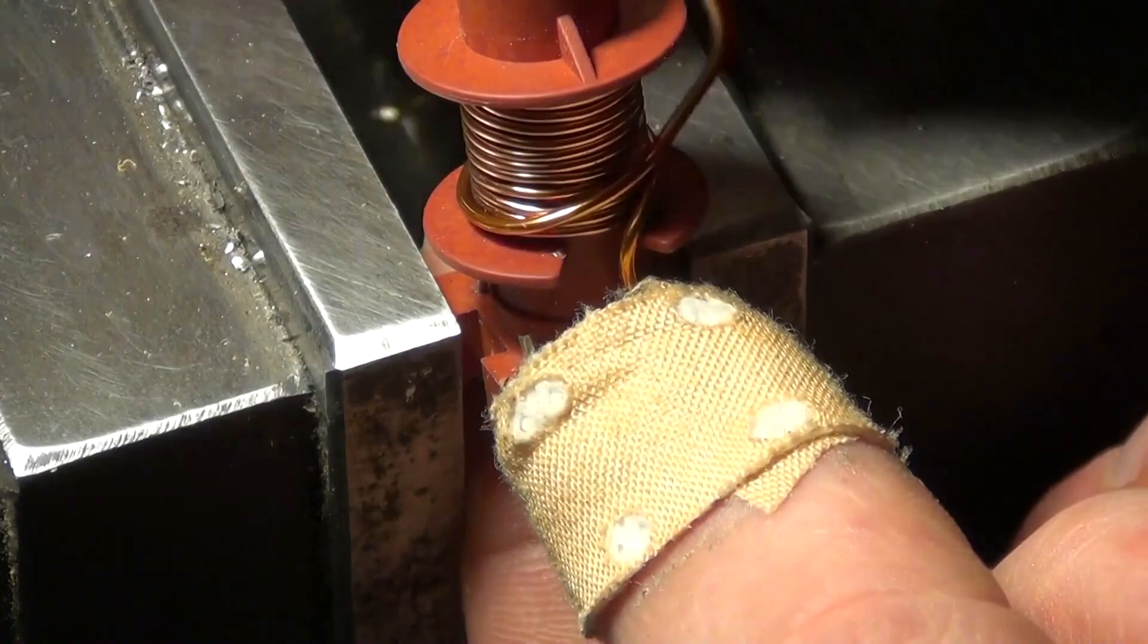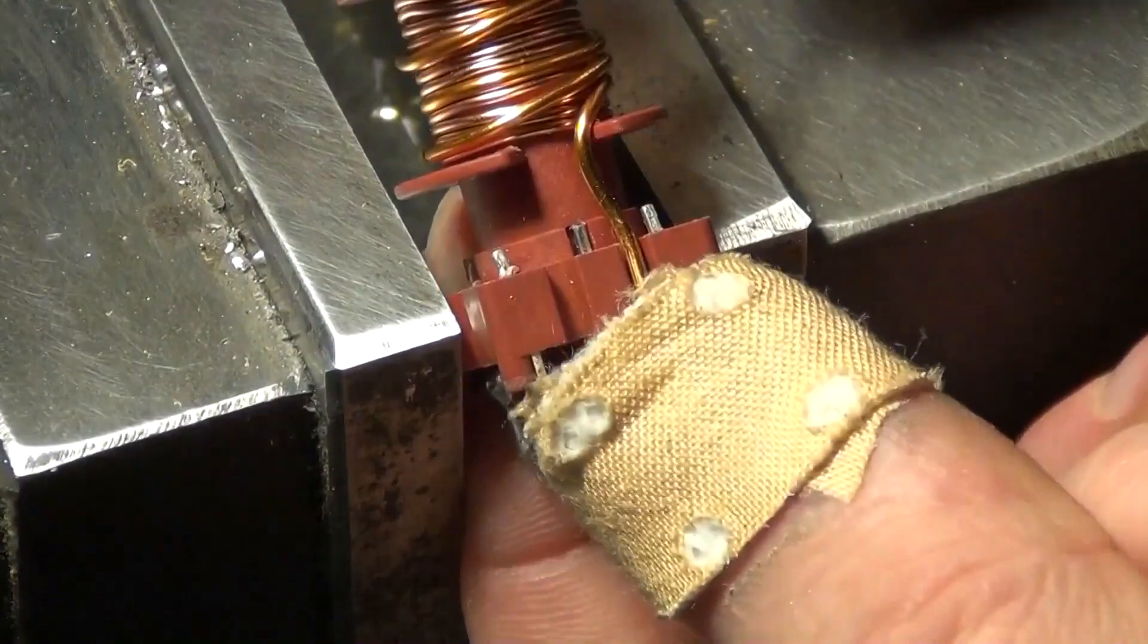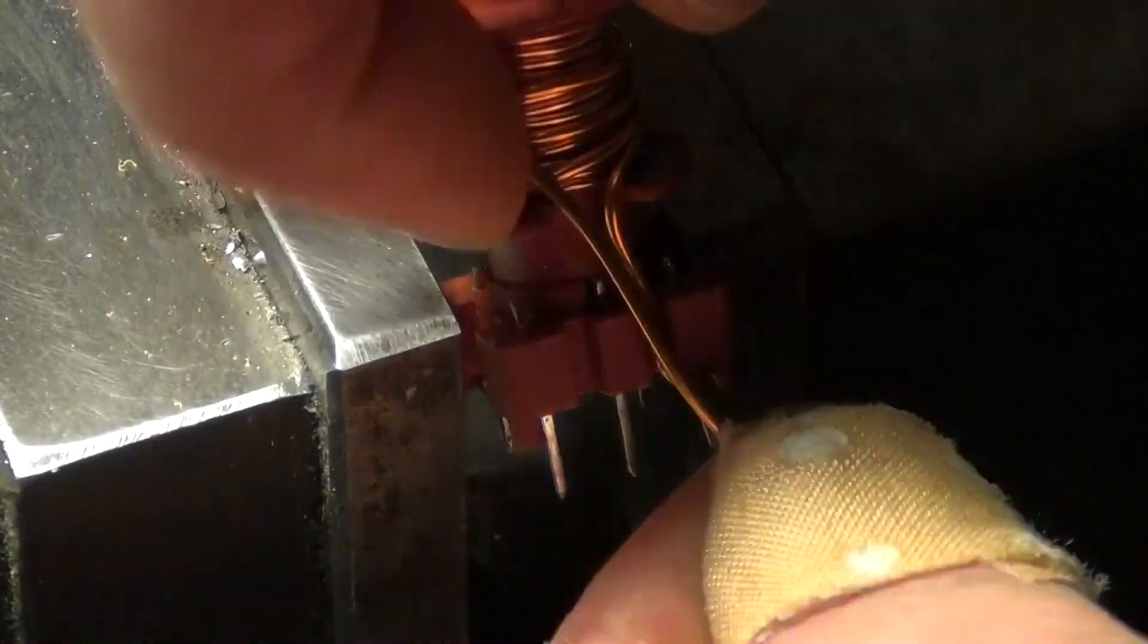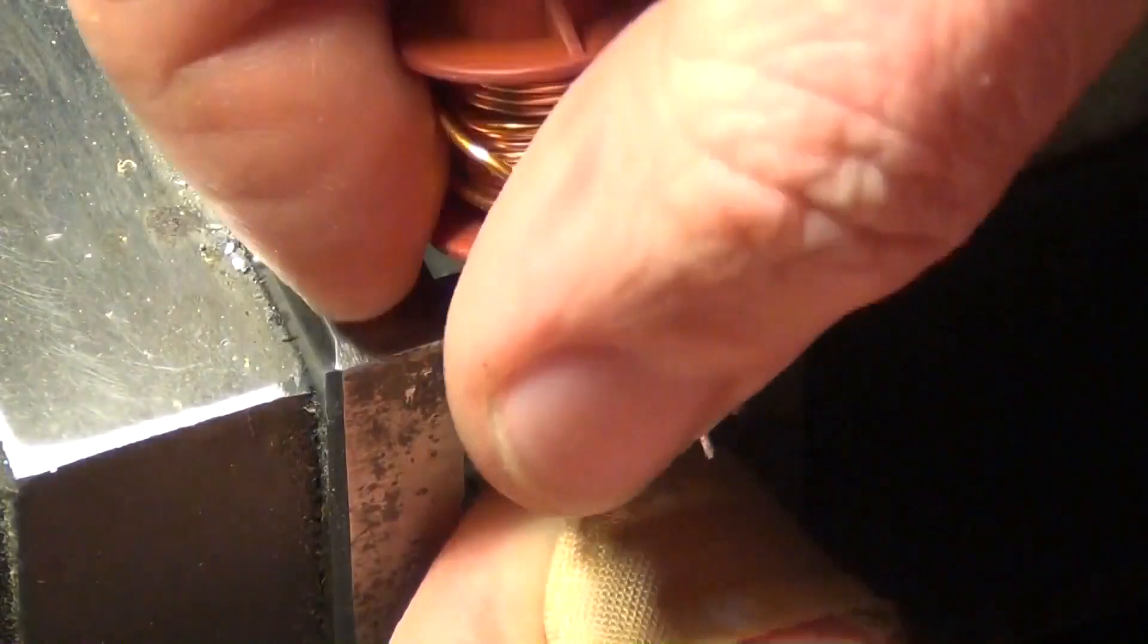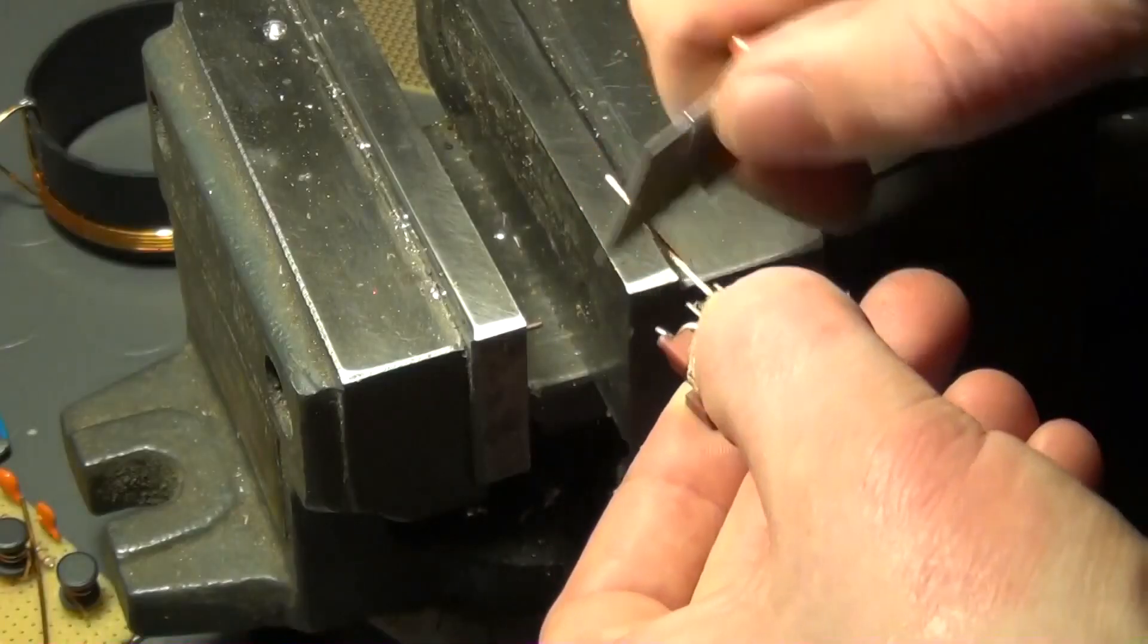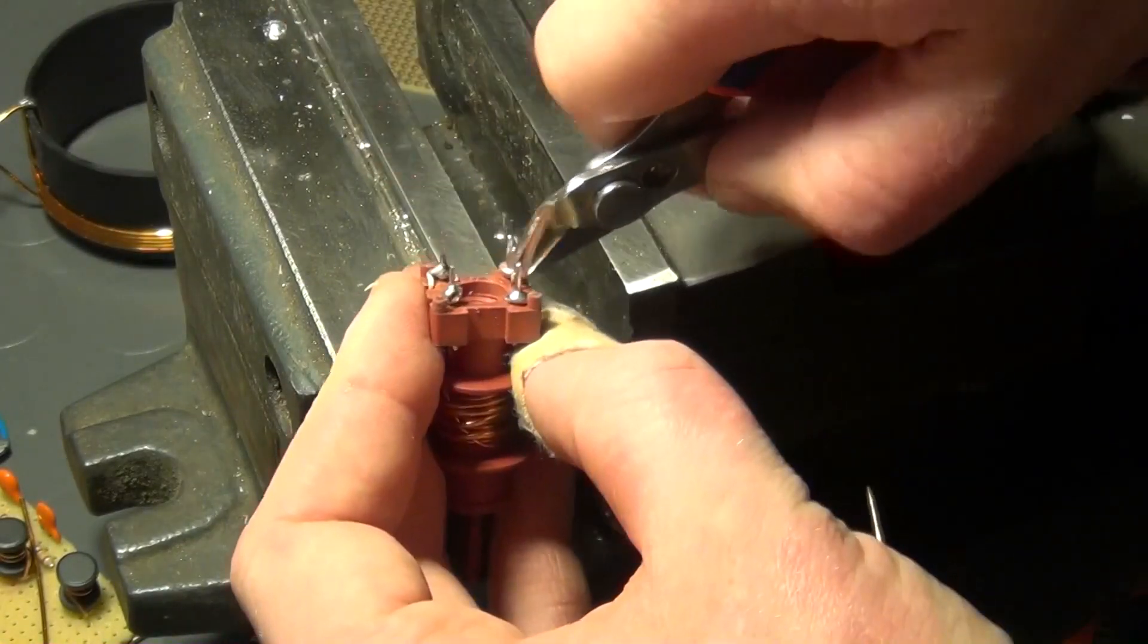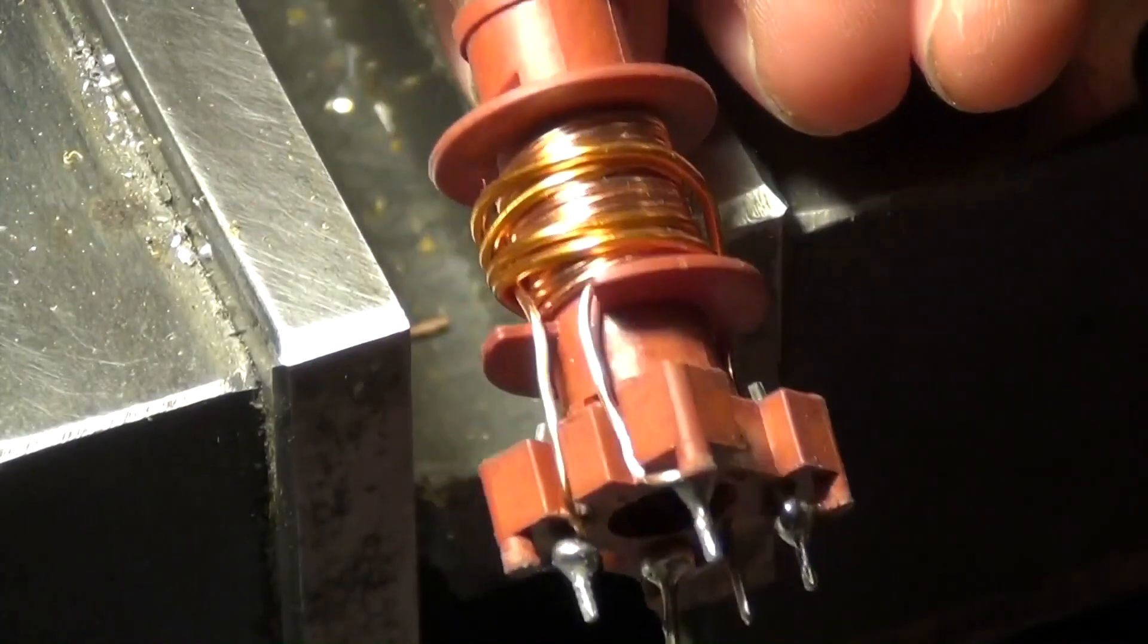Now the secondary winding is still to be made. For that, you take magnet wire with a diameter of around one millimeter and wind three turns around the primary winding. For this application, the sense of winding is not important. The process is the same as with the primary winding. After finishing the secondary winding, the transformer is completed.